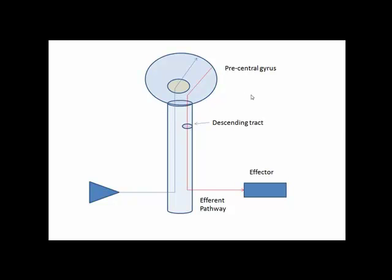Now I have to elicit a motor response — set the cup down or move my arm or hand. This motor response begins in the precentral gyrus, located in the frontal lobe. The frontal lobe elicits the motor response, and it follows a slightly different pathway out of the central nervous system. The pathway bypasses the thalamus, moves into the spinal cord, follows a descending spinal tract, and then exits the spinal cord via an efferent pathway — a spinal nerve — to an effector, which is a muscle, organ, or gland. In this case, it's the muscles of my hand and arm, and I set the cup down.